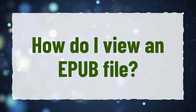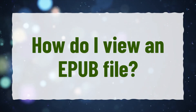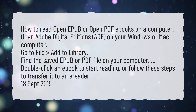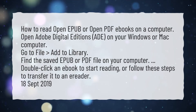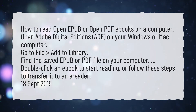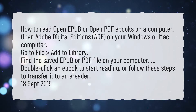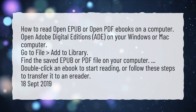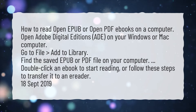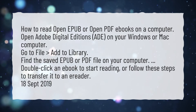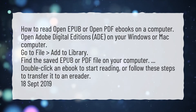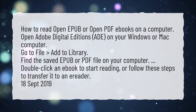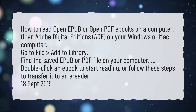How do I view an EPUB file? How to read open EPUB or open PDF e-books on a computer: Open Adobe Digital Editions (ADE) on your Windows or Mac computer. Go to File, Add to Library. Find the saved EPUB or PDF file on your computer. Double-click an e-book to start reading, or follow these steps to transfer it to an e-reader.